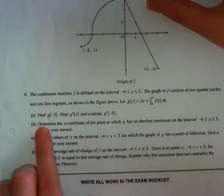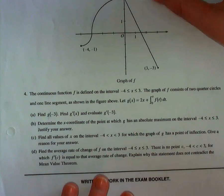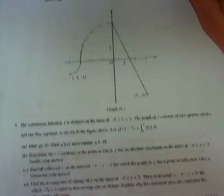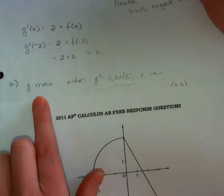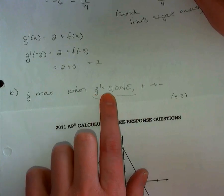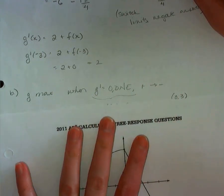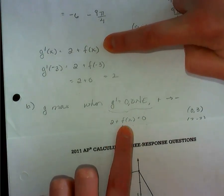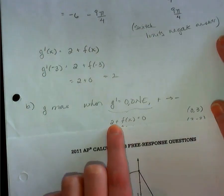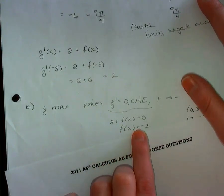Part B. I need to find the absolute maximum on a closed interval and I need to justify my answer. Okay, so for part B, what I'm looking at, here's my justification. I have a max when g prime is 0 or DNE and has a sign change of plus to minus. Now, g prime is 2 plus f(x). We found that in part A. So when does 2 plus f(x) equal 0? Well, when f(x) is equal to negative 2.